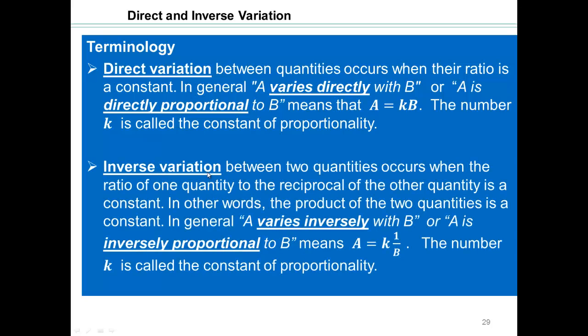Inverse variation between quantities occurs when the ratio of one quantity to the reciprocal of the other quantity is a constant. Or you can think of it as the product of the two quantities is a constant. So a varies inversely with b, or a is inversely proportional to b.